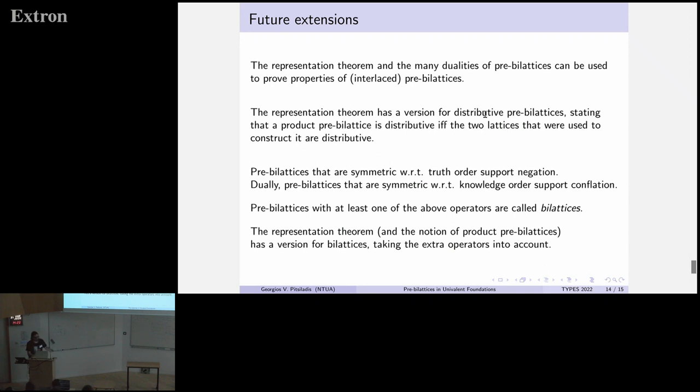So this can hopefully be used to prove properties of interlaced pre-bi-lattices by reducing them to product pre-bi-lattices, which have more definite structure. There is also a version of the representation theorem for distributive bi-lattices. And having done all that, another step would be to go to bi-lattices which add negation in one or the other of both orders. And that's all.